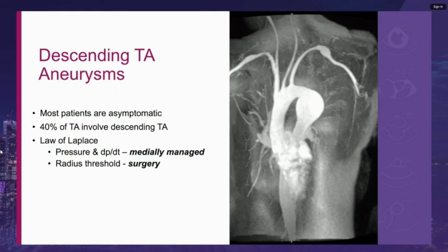40% of thoracic aneurysms involve the descending thoracic aorta, and most patients are asymptomatic on presentation. The key principle underlying management is the law of Laplace, which describes the relationship between wall tension, pressure, and radius. Pressure and dP/dt are medically managed; however, when a radius threshold is reached, surgery is the only option to mitigate the risk of aortic complications.